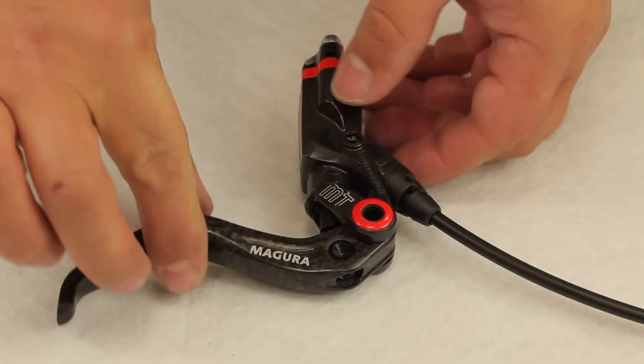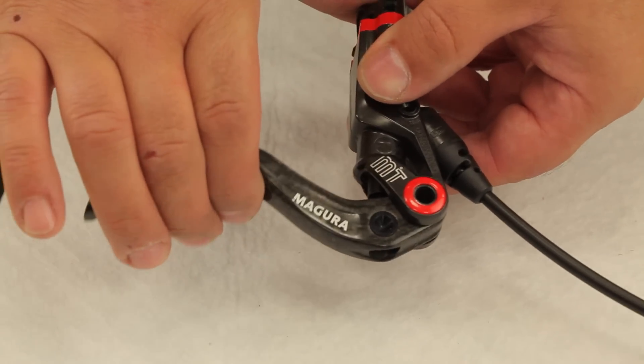Finally make sure that the reach adjust bolt clips audibly into the piston by pulling the lever completely.